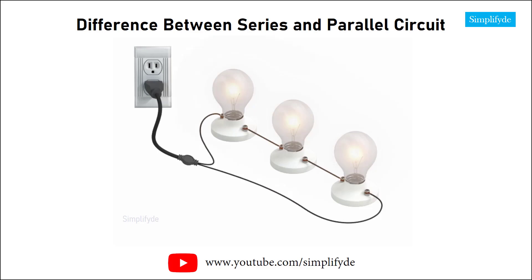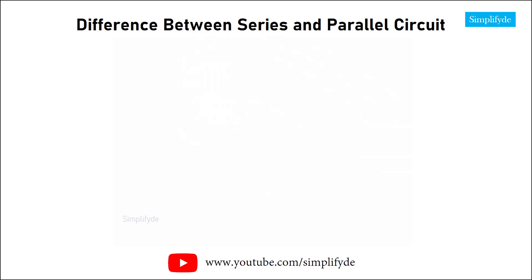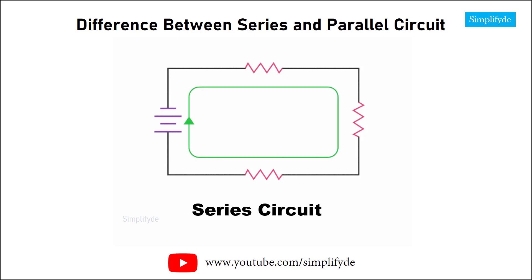Electronic components can be connected in a variety of configurations to form functional electrical circuits. The two simplest types of circuits are the series circuit and the parallel circuit. A circuit is said to be in series if all of its elements are connected along a single path with the current flowing in the same direction through each component.